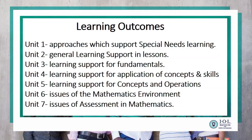Learning outcomes: this exam-based contact class is based on all seven outcomes of the SPR module or syllabus. Unit one deals with approaches which support special needs learning. Unit two covers general learning support in lessons. Unit three is learning support for fundamentals. Unit four is learning support for application of concepts and skills. Unit five covers learning support for concepts and operations. Unit six is issues of the mathematics environment, and unit seven covers issues of assessment in mathematics. From each learning outcome, you will come across a sub-topic or two covered in the exam.